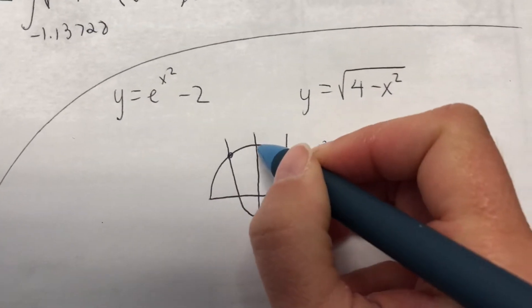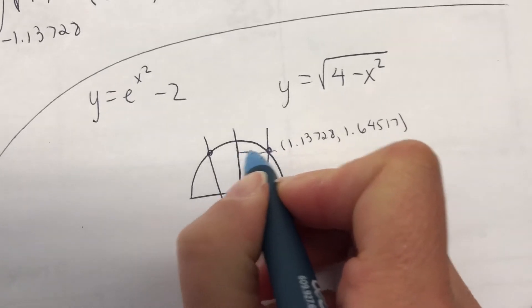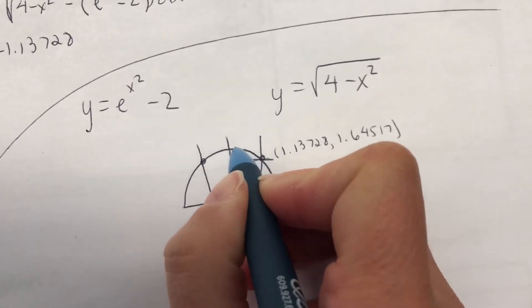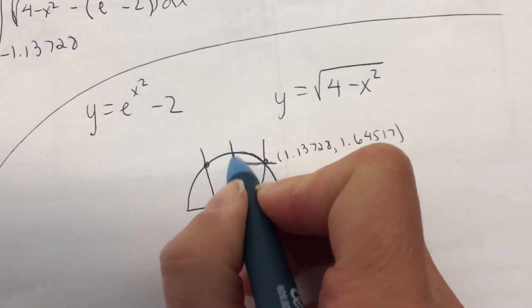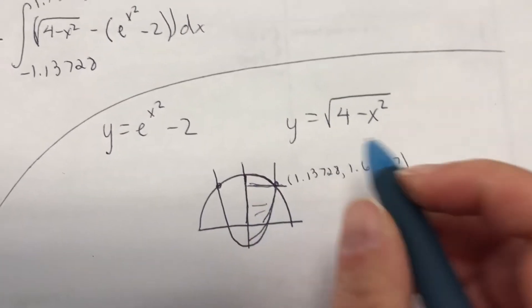So the way that I did it was I just did this one half of it, and I split it here. So then I just found the area of this curve to the y-axis, and then I did this curve to the y-axis, and then I just doubled it.